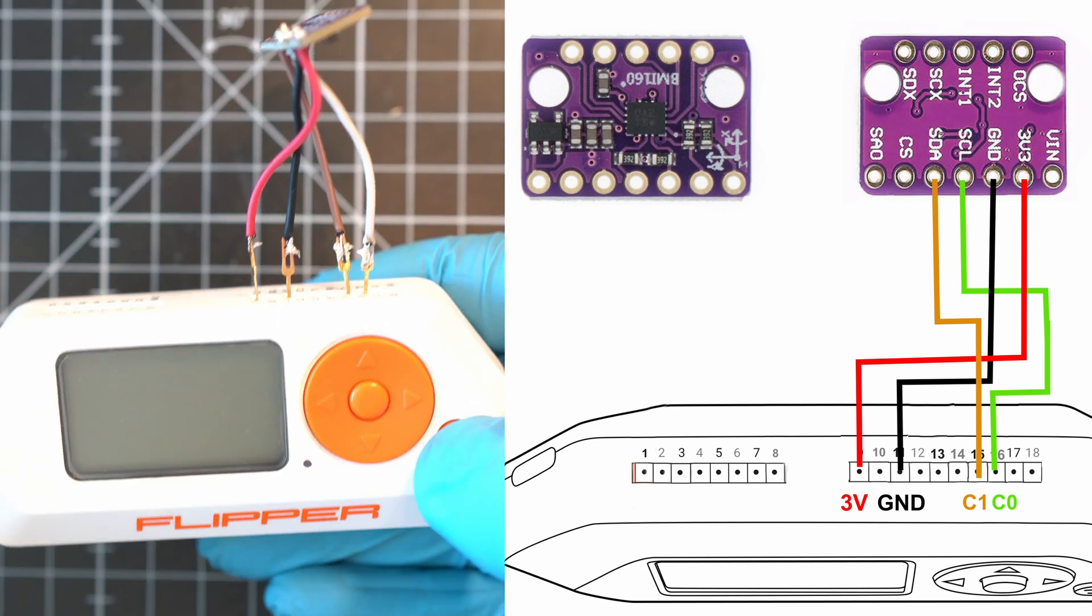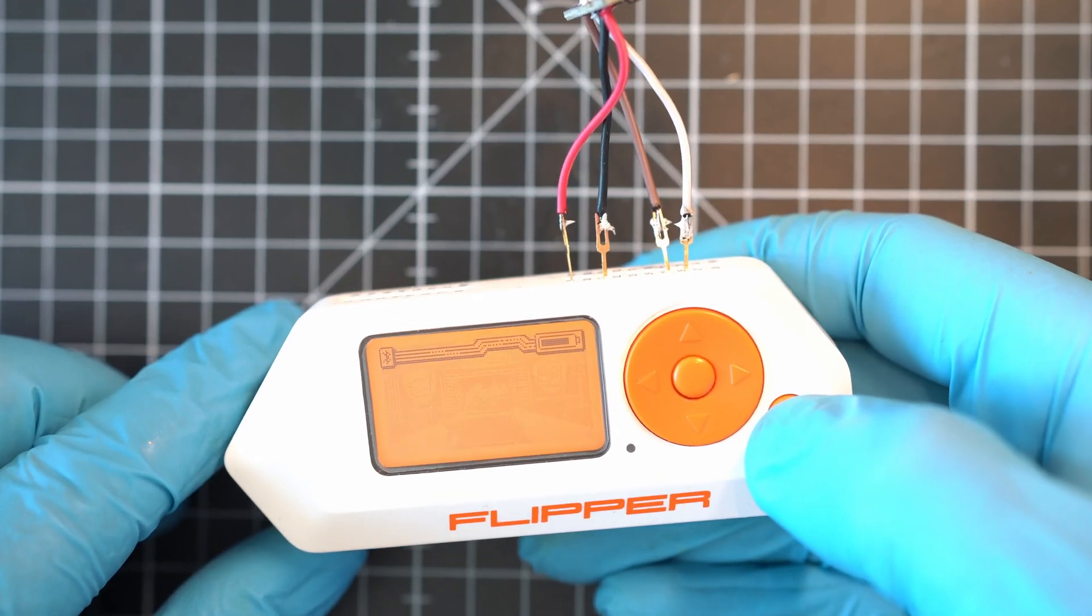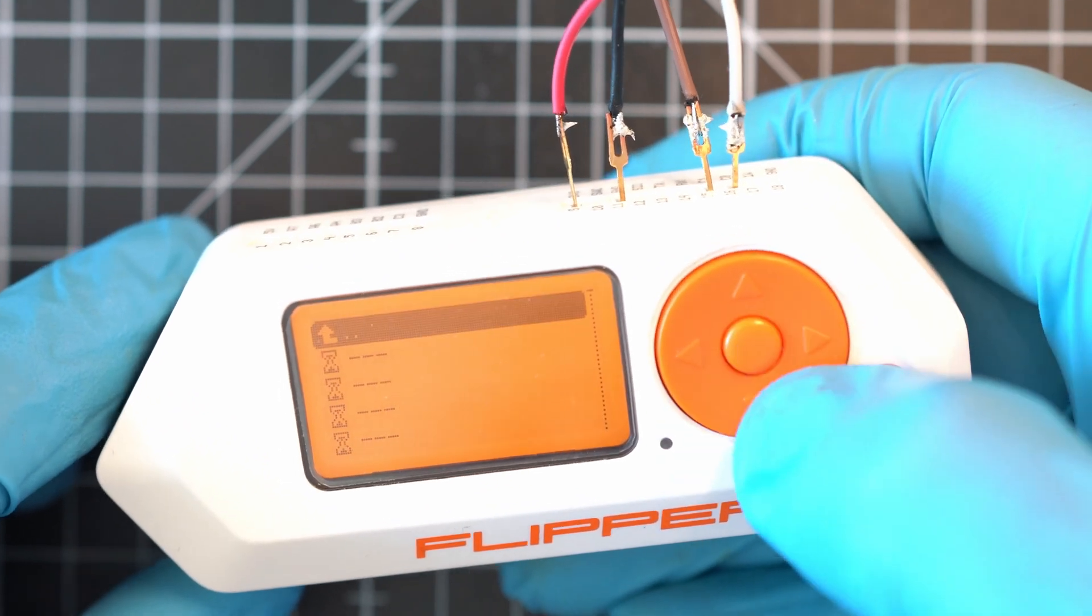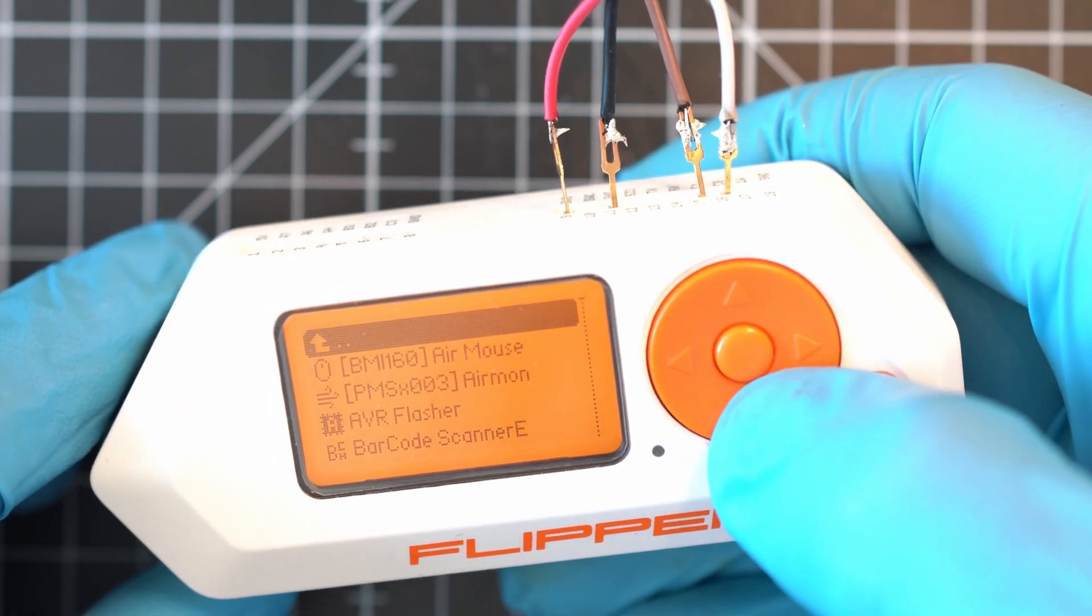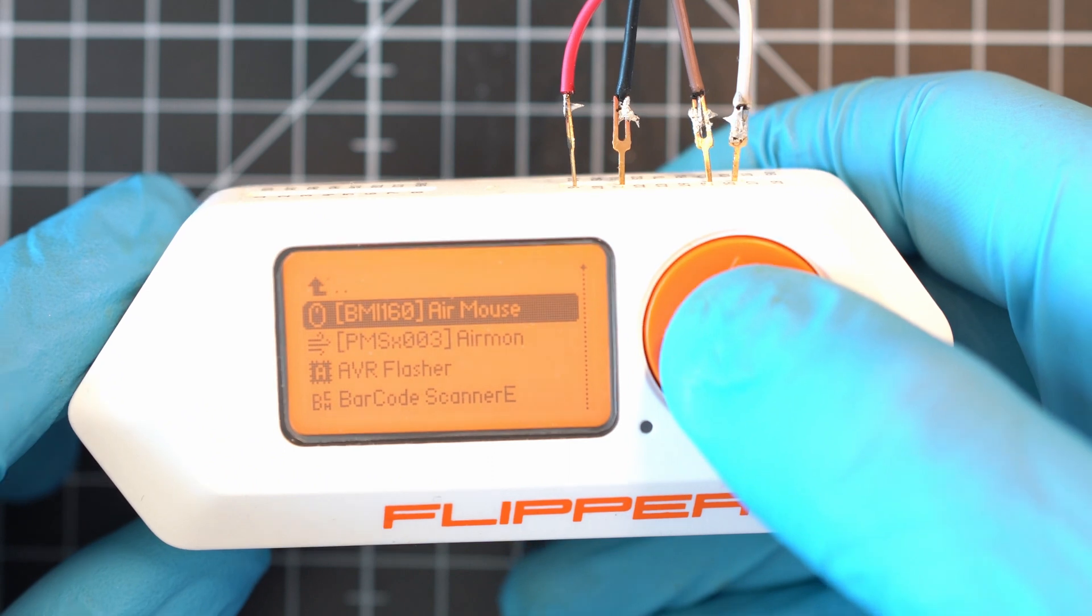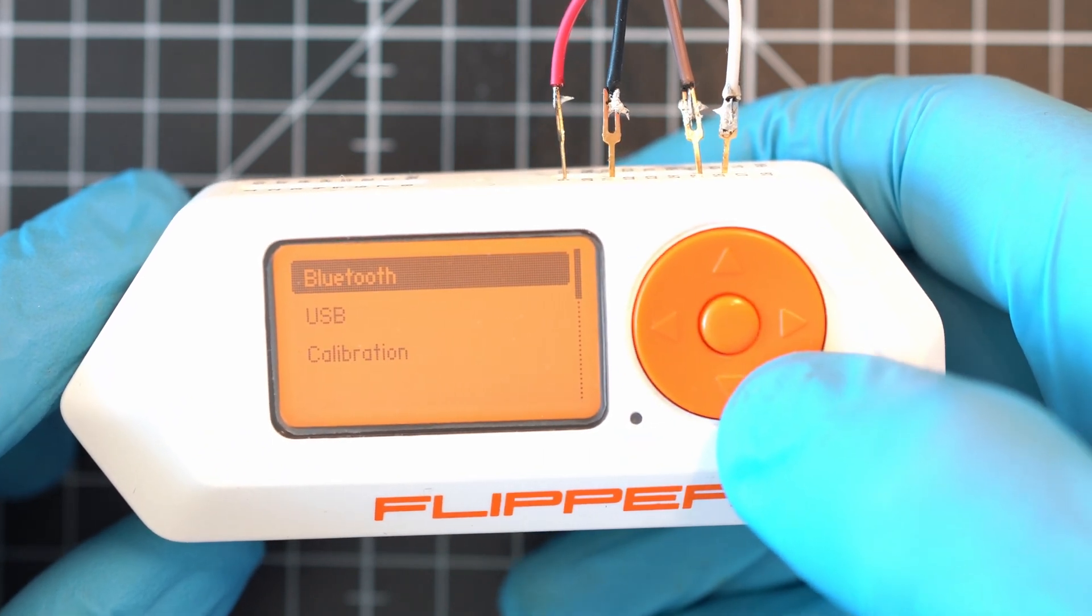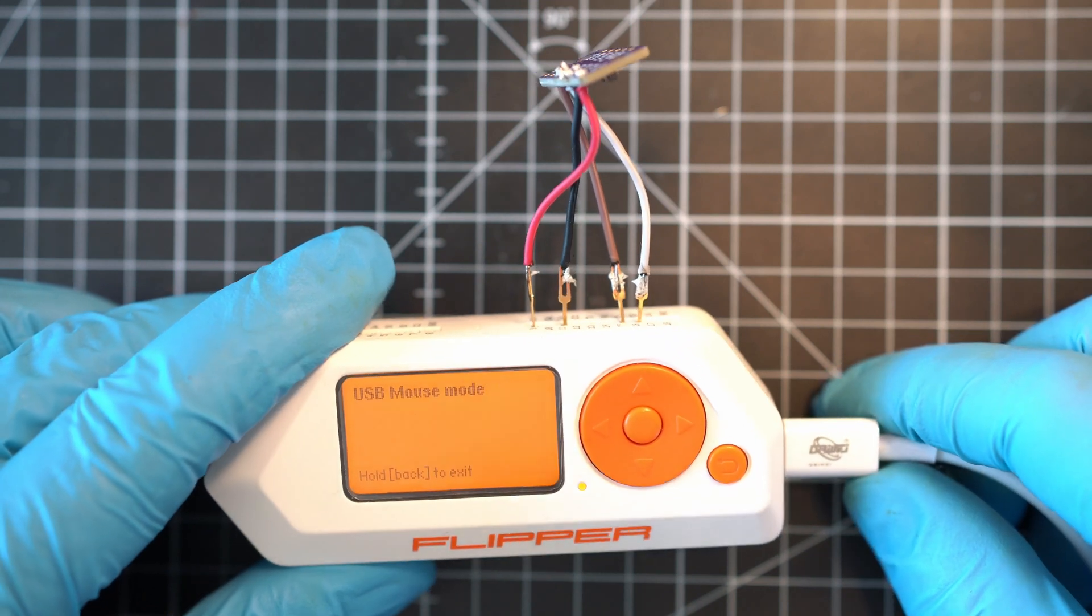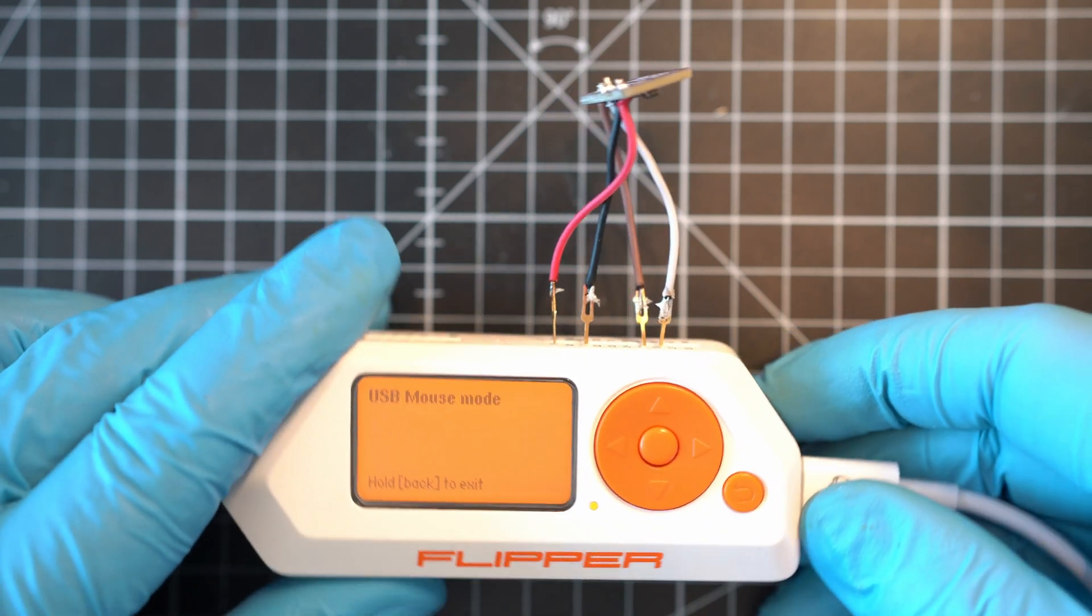Let's try this little sensor out. Power on, go to apps, then GPIO, and the first app is BMI160 air mouse. Choose connection, I'll do USB and move it to see the cursor move on the screen.